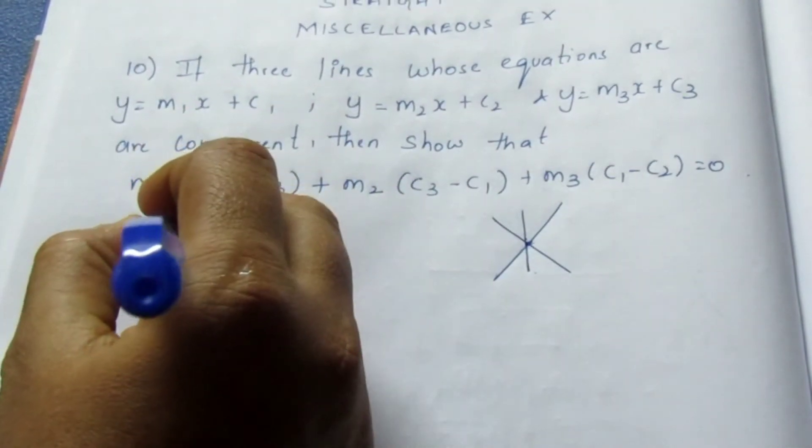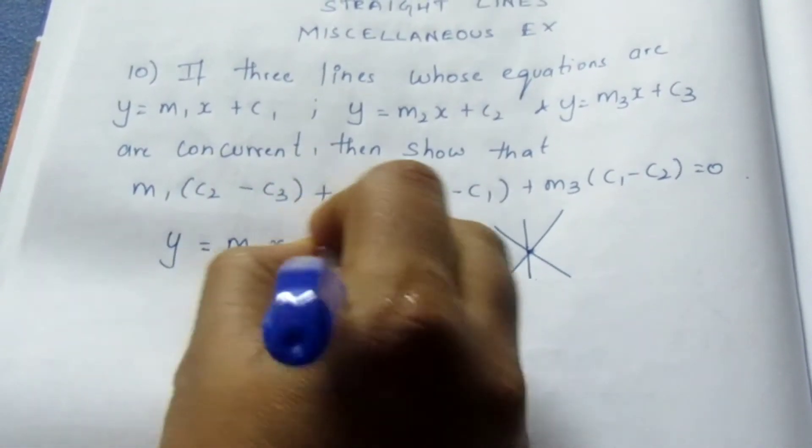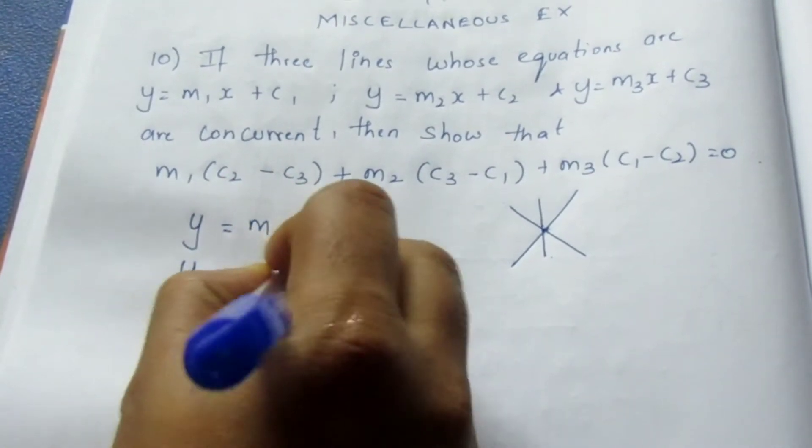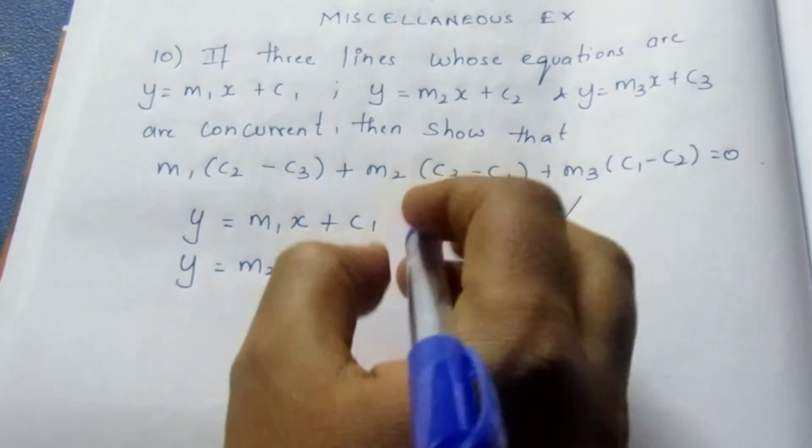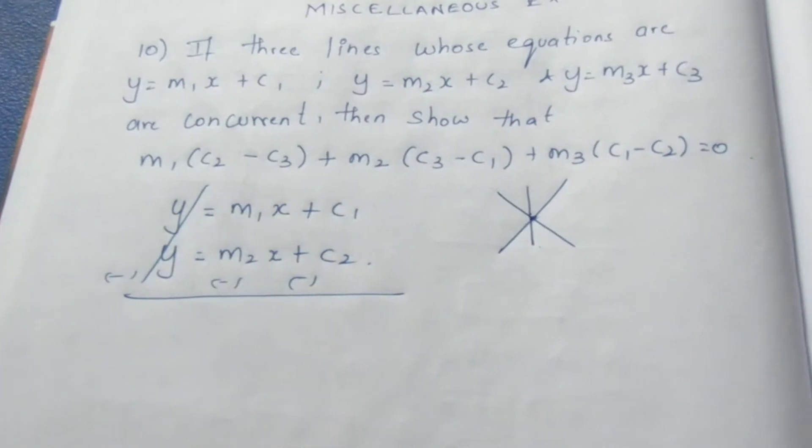Here, first equation is y = m₁x + c₁. Second one is y = m₂x + c₂. Now subtracting, this gets cancelled.